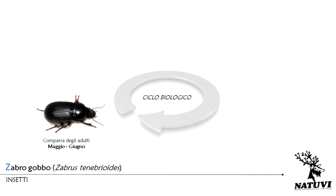Gli adulti del coleottero compaiono tra maggio e giugno. In una prima fase della loro crescita restano generalmente nascosti nel terreno, sotto le zolle o cespi di erba, per poi risalire durante la notte lungo le piante alla ricerca di cariossidi.